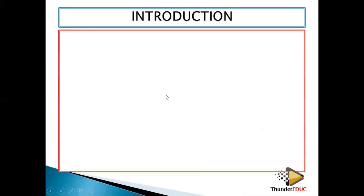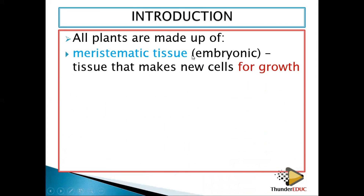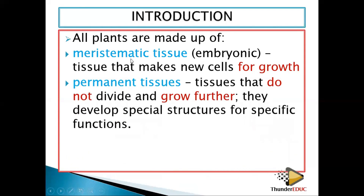All plants are made up of meristematic tissues — the embryonic tissues that make new cells for growth — and permanent tissues. Permanent tissues do not have the ability to divide and grow; they are fully grown and cannot modify into another special structure. Instead, they develop special structures for specific functions.